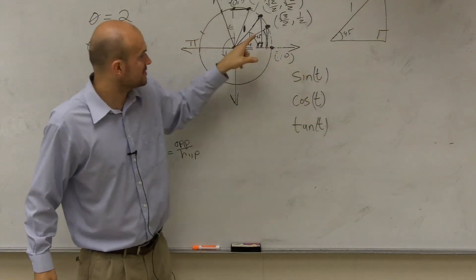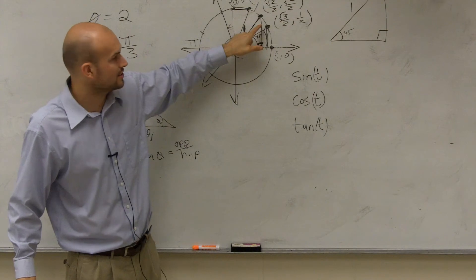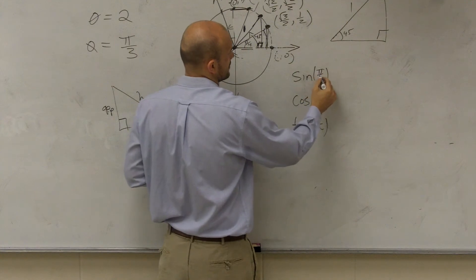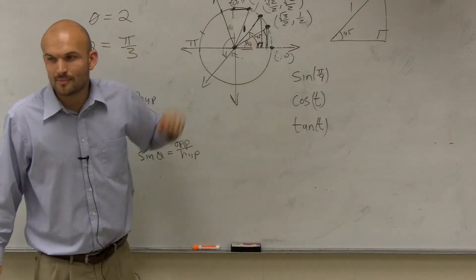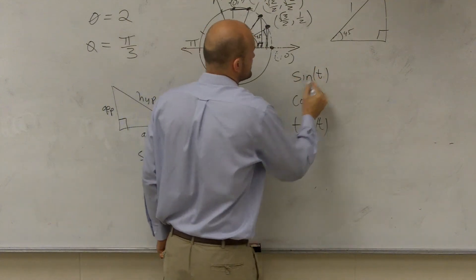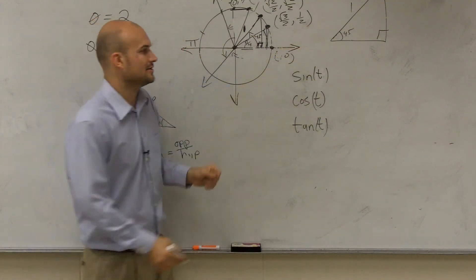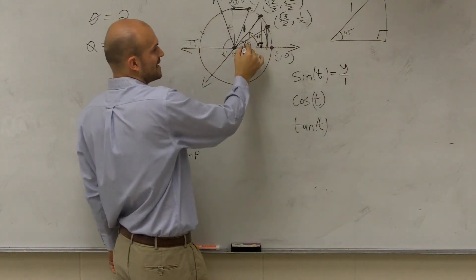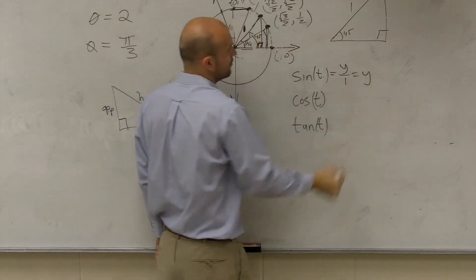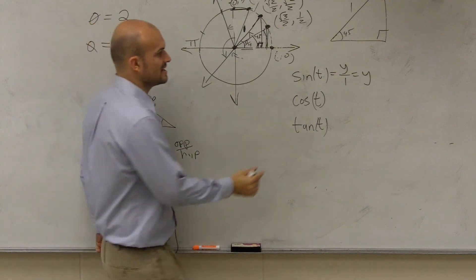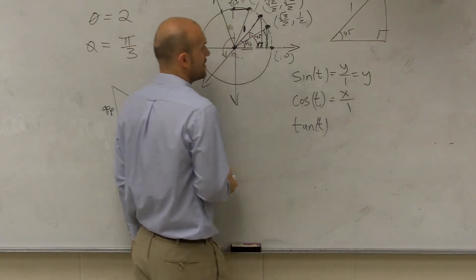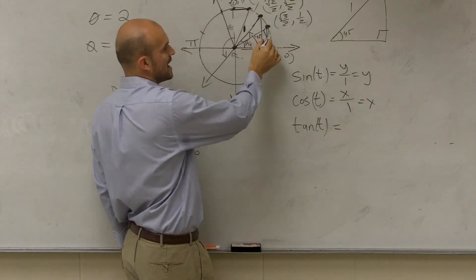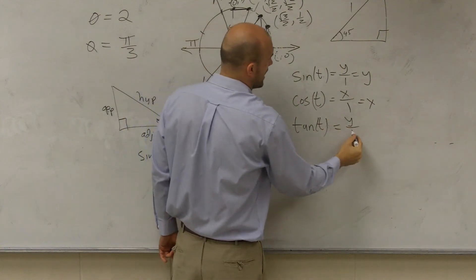So therefore, when I did sine of t, where t represents a point on the unit circle — the sine of pi over four — sine of t always represented the opposite over the hypotenuse, which was always y over 1. Because y is going to be your opposite side of your central angle, which always just equals y. So the cosine of t always represented the adjacent over the hypotenuse, which is just x. And the tangent was opposite over adjacent, which was y over x.